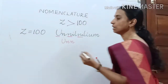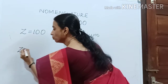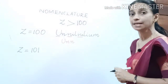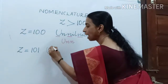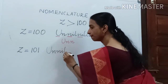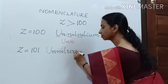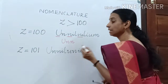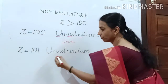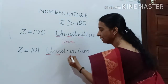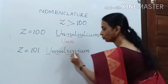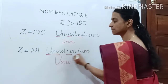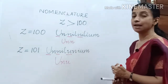Now we shall name the element with Z value 101. The name will be 'unnilunium', built from 'un', 'nil', 'un', and the suffix 'ium'. The symbol will be 'Unu'.